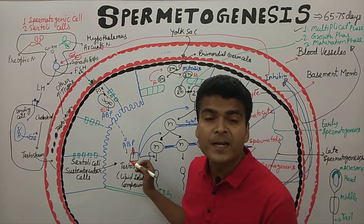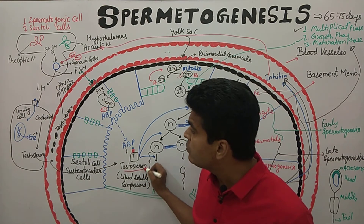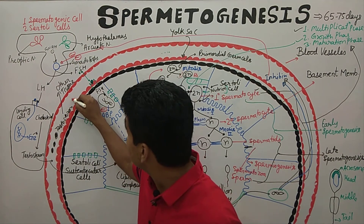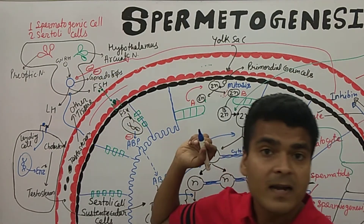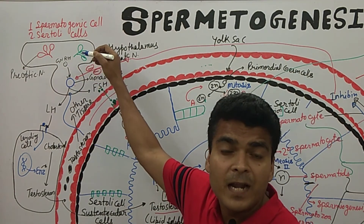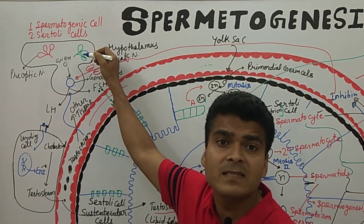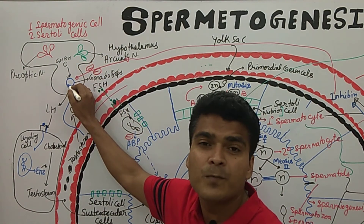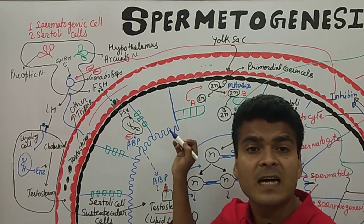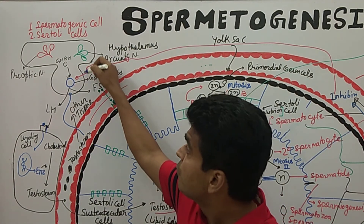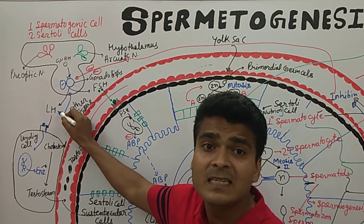There is also a second feedback system involving testosterone. When testosterone level in the blood becomes too high, this higher testosterone level reaches the anterior pituitary. The anterior pituitary senses the high testosterone level and the gonadotroph cells are inhibited, reducing their hormone output.